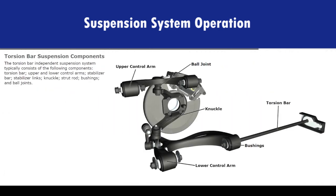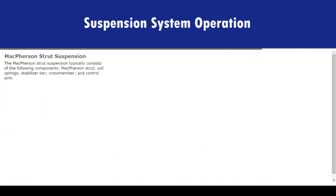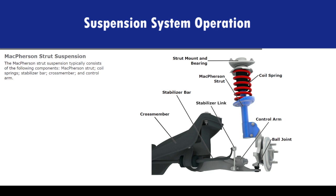The torsion bar independent suspension system typically consists of the following components: torsion bar, upper and lower control arms, stabilizer bar, stabilizer links, knuckle, strut rod, bushings, and ball joints. The McPherson strut suspension typically consists of the following components: McPherson strut, coil springs, stabilizer bar, cross member, and control arm.